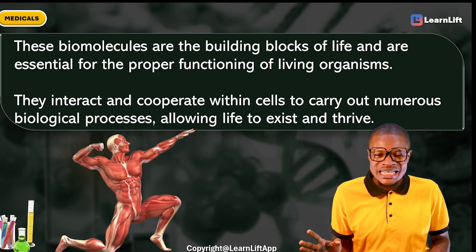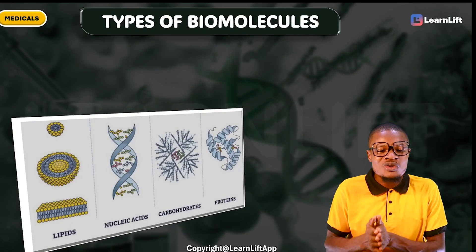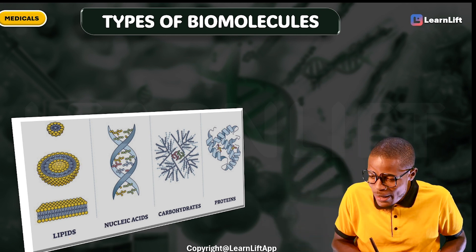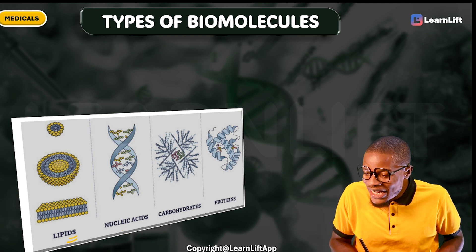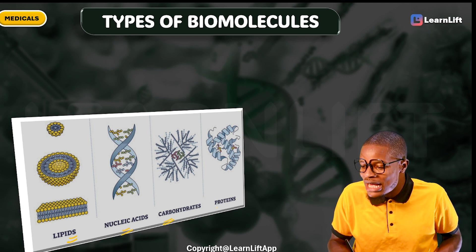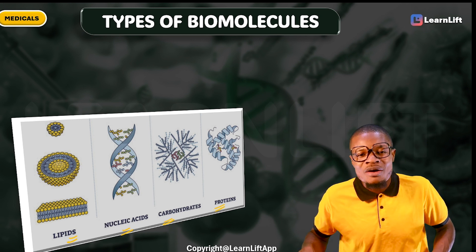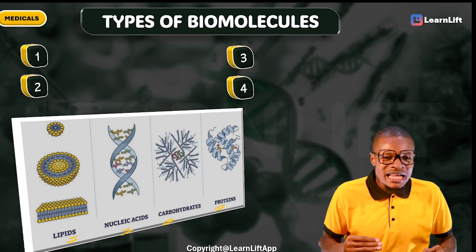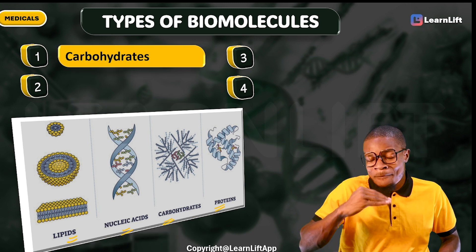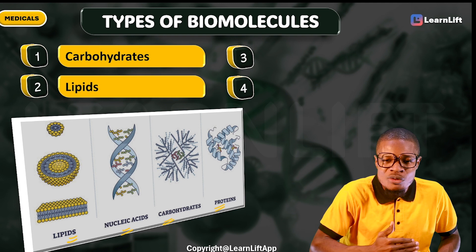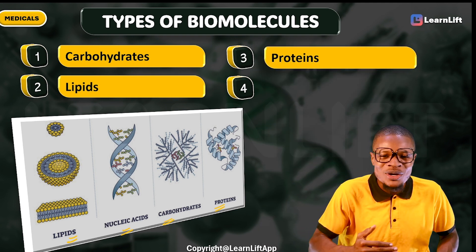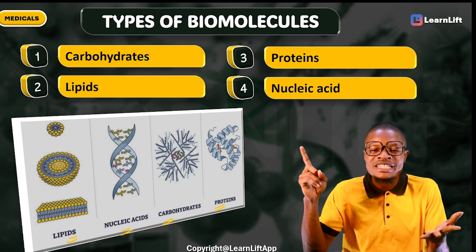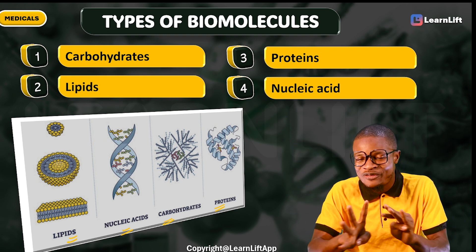So biomolecules are very important in the body. Quickly, what are the types of biomolecules? There are four types. You can see: your lipids — they are biomolecules; your nucleic acids — they are biomolecules; your carbohydrates — they are biomolecules; and your proteins — they are biomolecules. So in general, there are four primary types of biomolecules: number one, carbohydrates; number two, lipids; number three, proteins; and number four, nucleic acids.